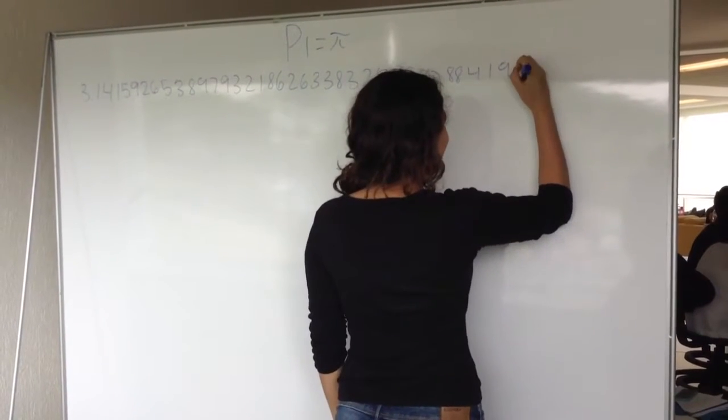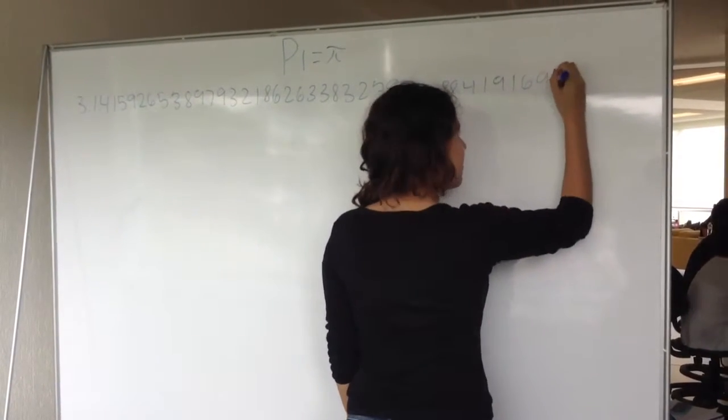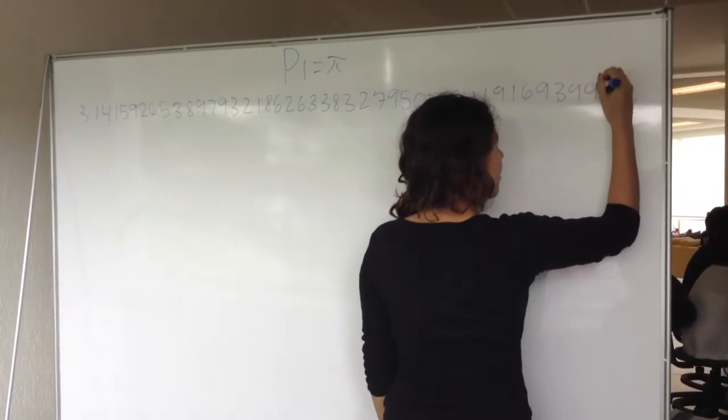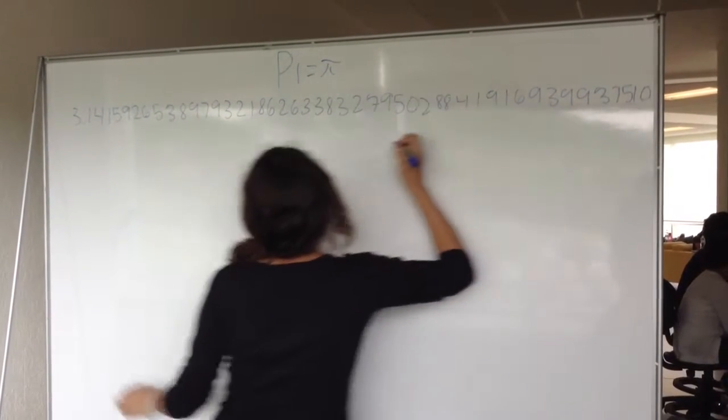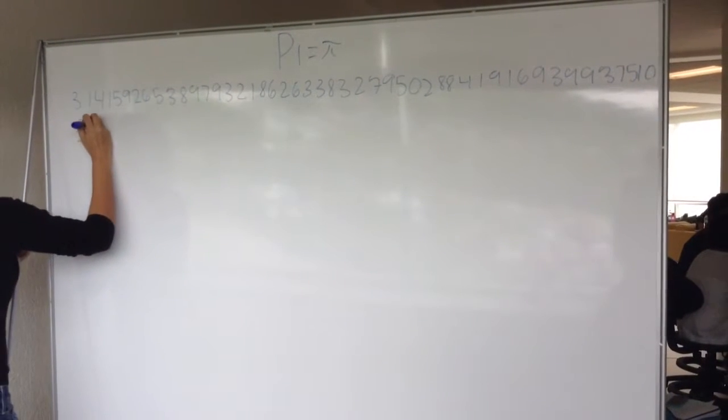So pi is also an irrational number and it keeps going on and on and it's never ending. It's also transcendental because there is no equation that can give you pi.